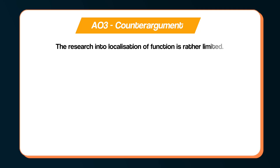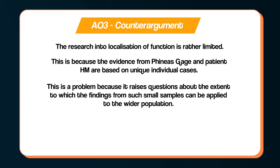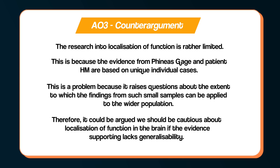You could add to your discussion by critiquing this research, making sure to link the criticism to the issue of localisation of function, and not just make a simple criticism of a study. The research into localisation of function is rather limited because the evidence from Phineas Gage and Patient HM is based on unique individual cases. This raises questions about the extent to which findings from such small samples can be applied to the wider population. Therefore, we should be cautious about localisation of function in the brain if the evidence supporting it lacks generalisability.